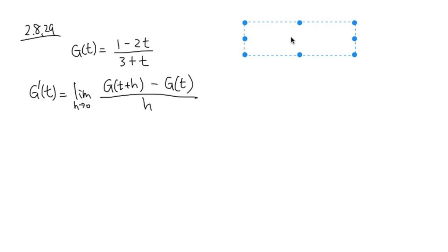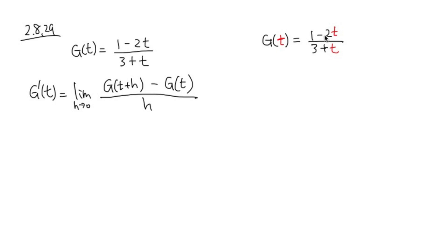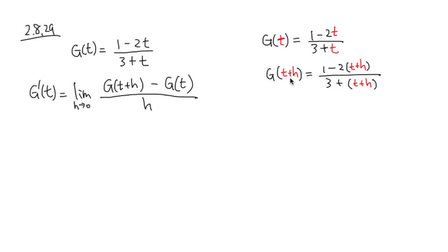Let's look at the ingredients. We know that the function is g of t equals 1 minus 2t over 3 plus t. We also need to figure out g of t plus h, and to do that we plug t plus h into all the t's. So g of t plus h equals 1 minus 2 times (t plus h), over 3 plus (t plus h).